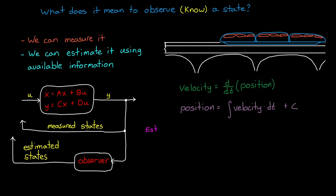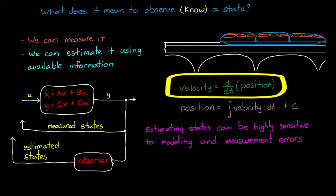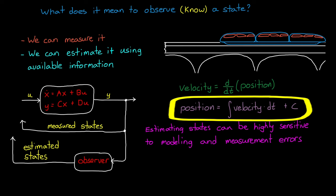With that being said, even if you can estimate a state, some states could be highly sensitive to modeling and measurement errors. For example, differentiating a noisy position creates an even noisier velocity. Or a small bias in velocity measurement would cause an ever-growing error in position.